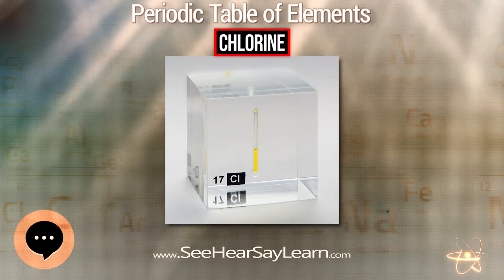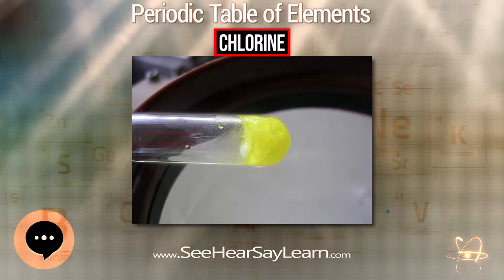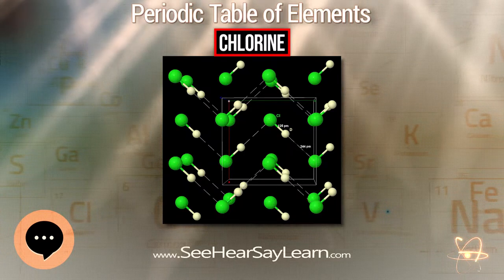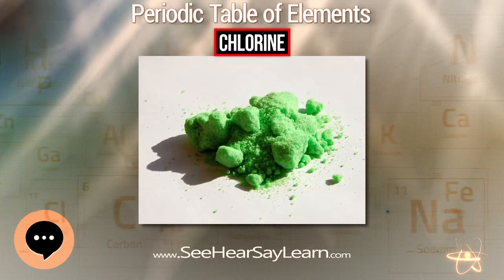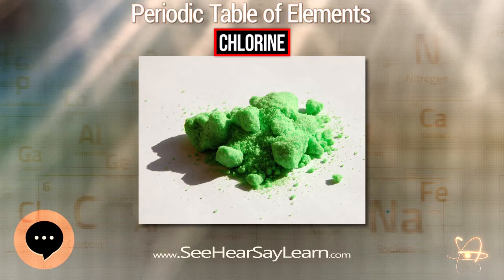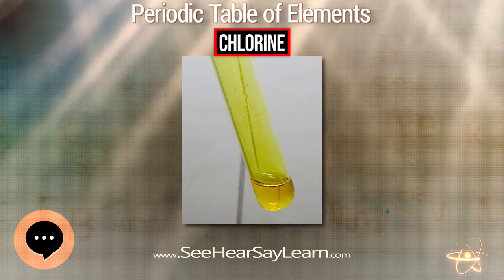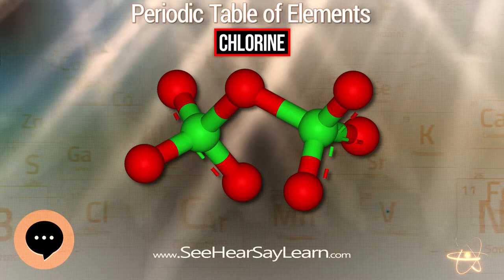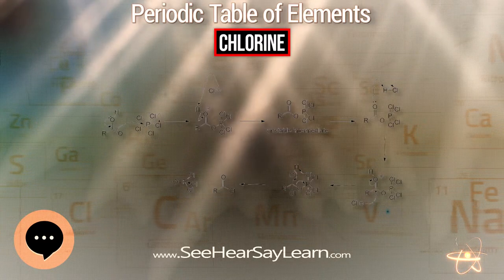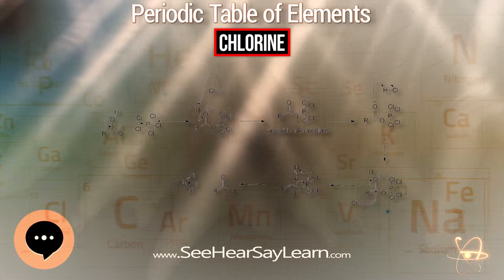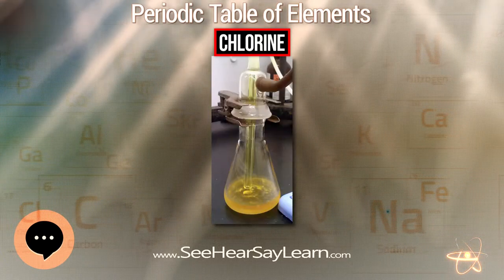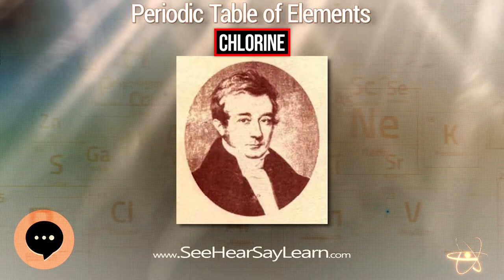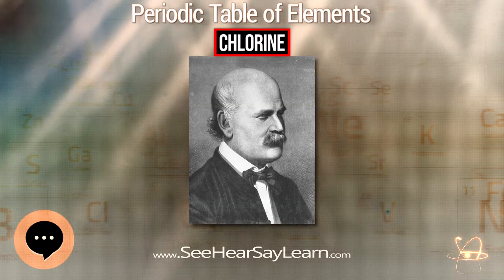Solvolysis, ligand replacement reactions, and oxidations are well characterized in hydrogen chloride solution. Nearly all elements in the periodic table form binary chlorides. The exceptions stem from one of three causes: extreme inertness and reluctance to participate in chemical reactions; extreme nuclear instability hampering chemical investigation before decay; or having an electronegativity higher than chlorine's, so that the resultant binary compounds are formally not chlorides but rather oxides or fluorides of chlorine. Chlorination of metals with Cl₂ usually leads to a higher oxidation state than bromination with Br₂ when multiple oxidation states are available.